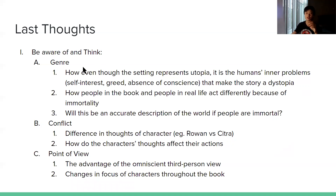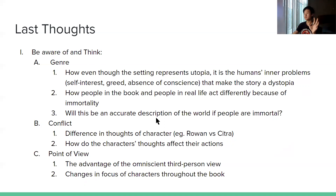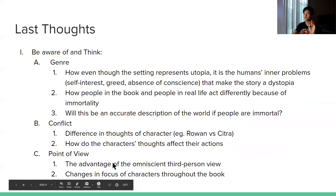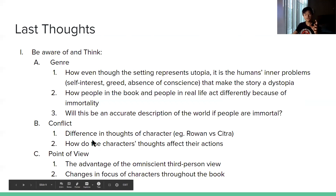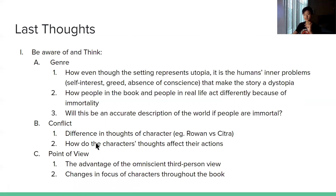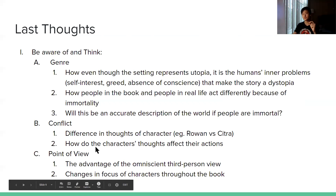Because this is the last video about Scythe, I want to leave you with some thoughts you can carry on while reading the rest of the book. The genre: because the setting involves a utopia doesn't mean it is actually a utopian book. The humans' inner problems — self-interest, greed, and the absence of conscience — is what makes the story a dystopian novel. How people in the book and people in real life act differently because of immortality. Pause and consider how people in your life are also similar to the people inside the book. And is this an accurate description of the world if people were immortal?